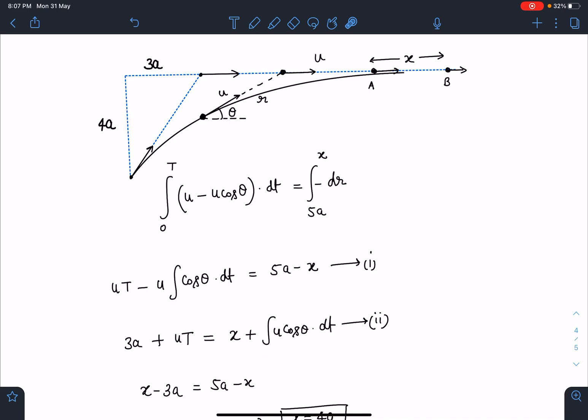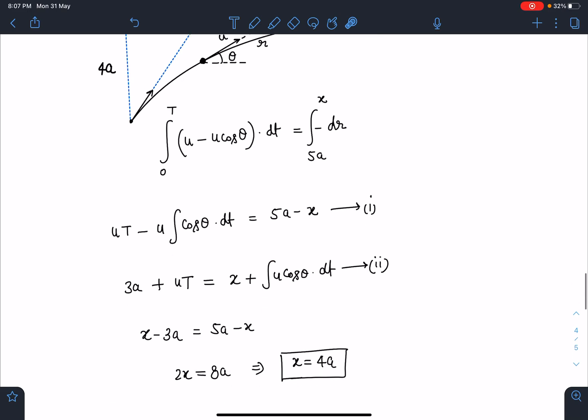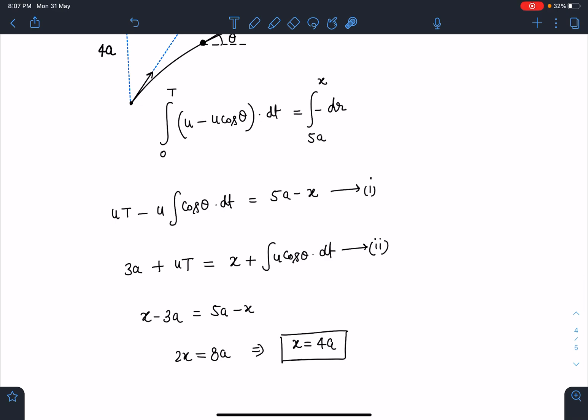Now if I eliminate these two in the previous equation, I can get uT minus integral(u*cos(theta)*dt). If I equate, I'll be getting x minus 3a is equal to 5a minus x. When I simplify this, I am getting x is equal to 4a.